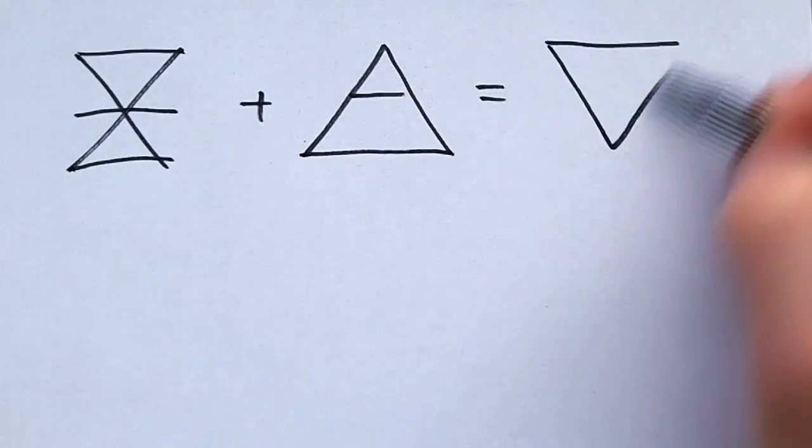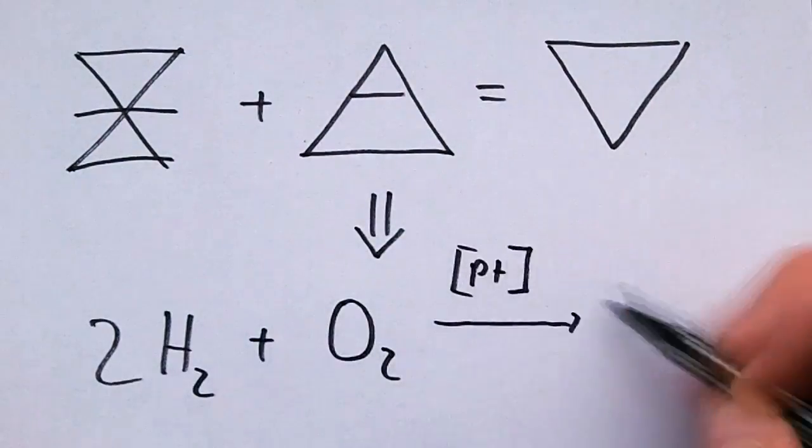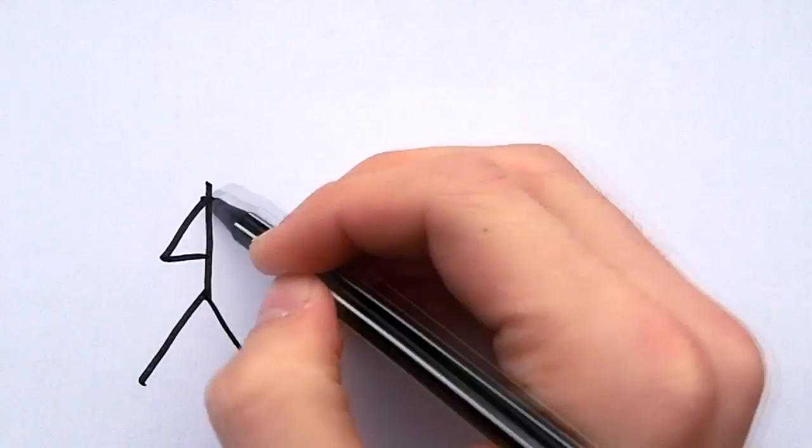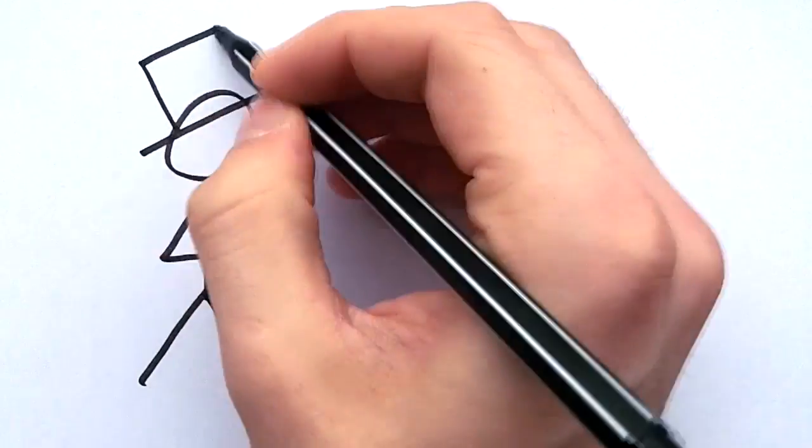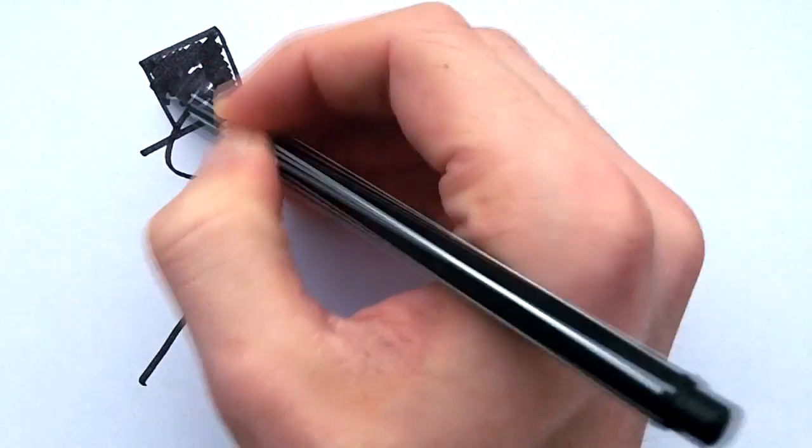Before chemistry was a science there was alchemy. One of the big goals of alchemists in the Middle Ages was to discover the Philosopher's Stone, which was said to be able to convert base metals like lead to precious metals like silver and gold.